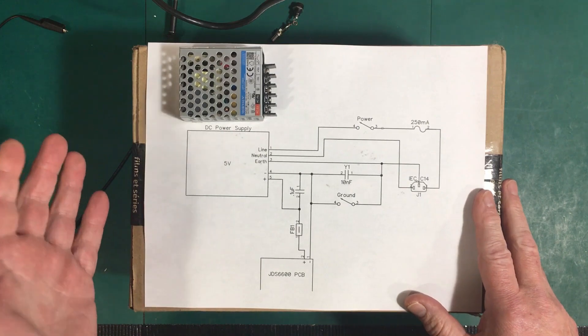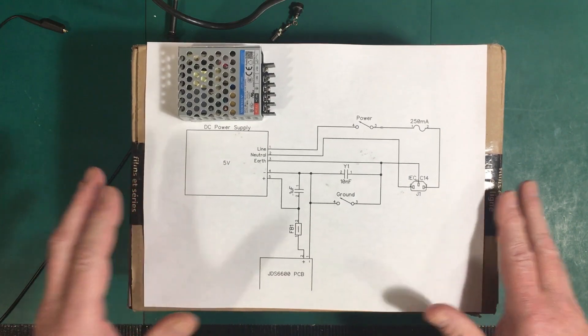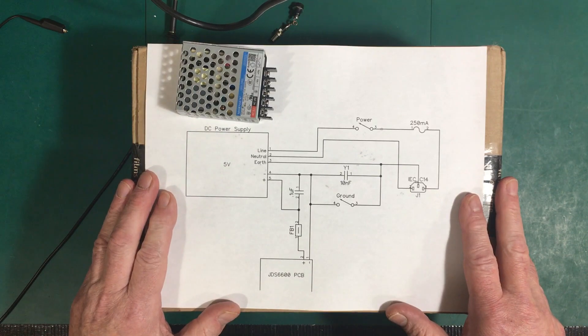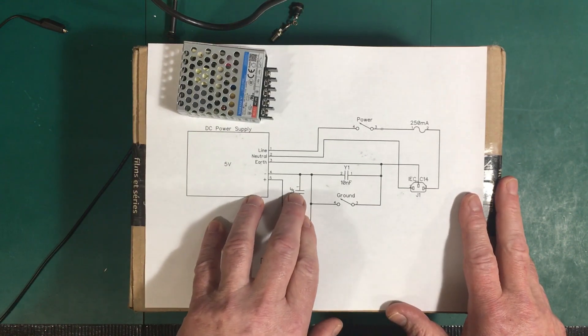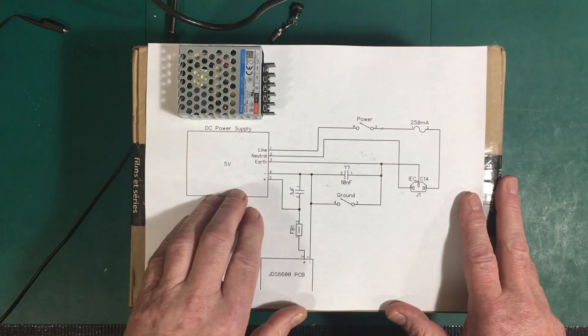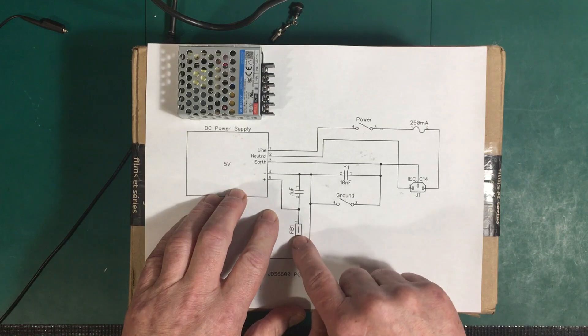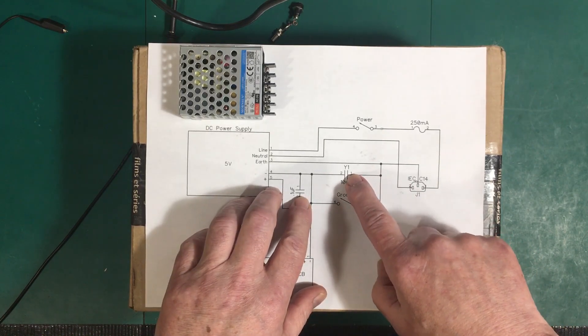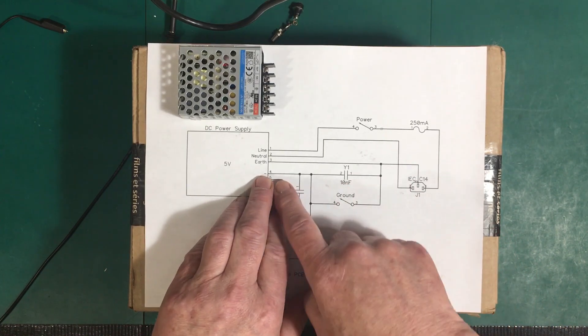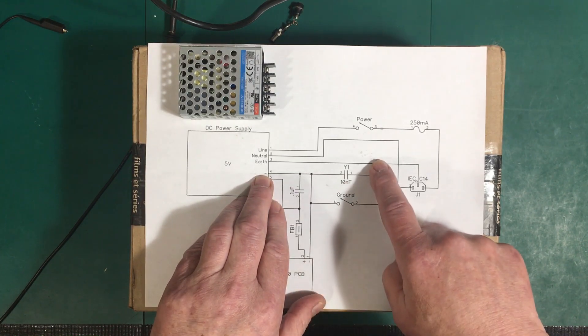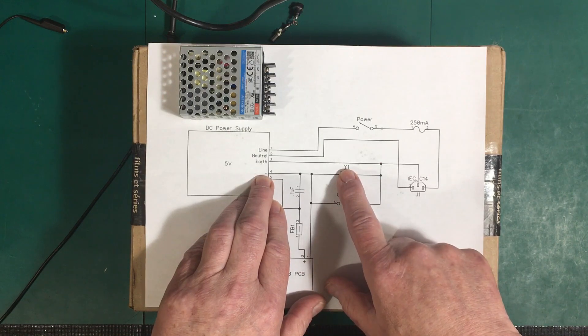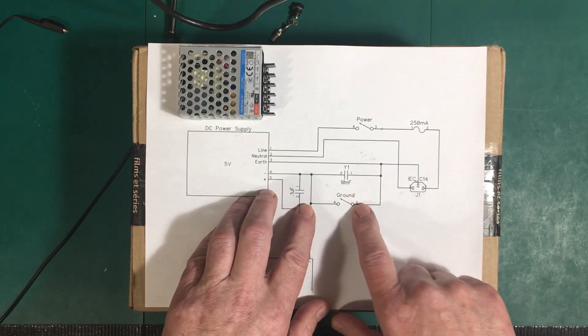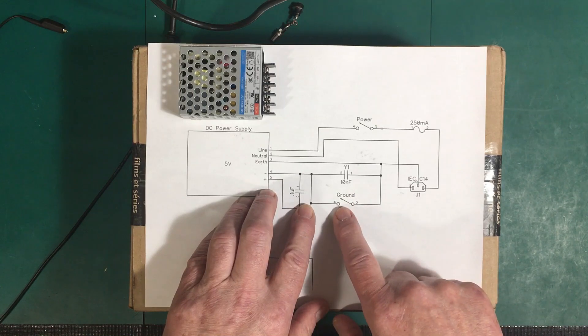On the output we're going to put a 0.1 microfarad capacitor, suggested by Mourn Sun for reducing interference, and a ferrite bead as well. Then we're putting a Y1 type capacitor, 10 nanofarad, between the negative DC output and earth ground. This is also suggested by Mourn Sun as a way to control leakage voltage. I'm also going to put a switch in to directly ground it for times when I want a proper ground reference.